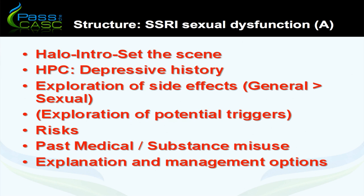The management options I gave in this example were: first, staying on the medication, because he'd already noticed an improvement in his depressive symptoms including an improvement in his libido, and there was room for further improvement which could have a knock-on effect on his sexual side effects. Second, lowering the dose — he was on 40 milligrams of fluoxetine — but if there was a reduction, being vigilant in monitoring his depressive symptoms to look for any potential signs of relapse. Or third, switching to an alternative medication such as mirtazapine, but emphasising that this may help with the sexual side effects but may not necessarily work as well in terms of treating his depressive symptoms.